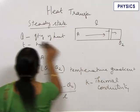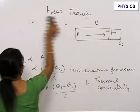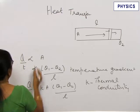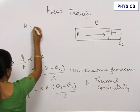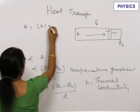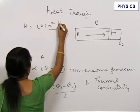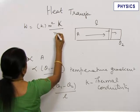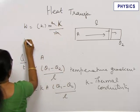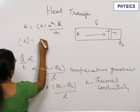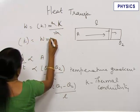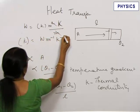Let us now find the unit for K. So what is Q by T? Q by T is watts. This is meter square. This is Kelvin capital K and this is meter. So the unit of K is watts per meter per Kelvin.